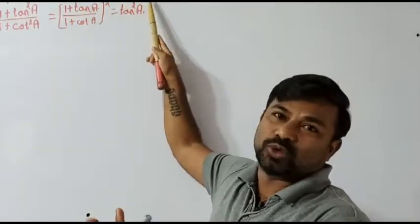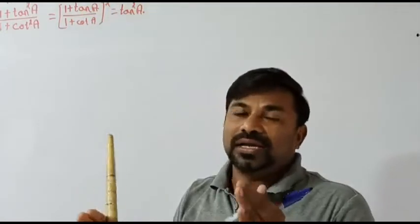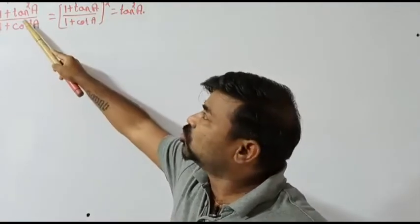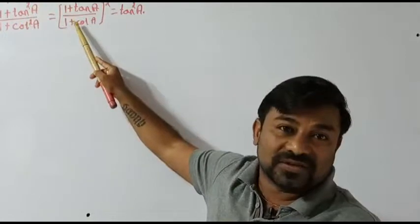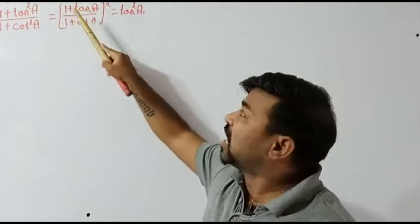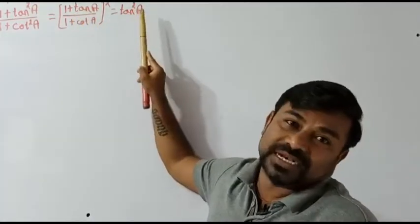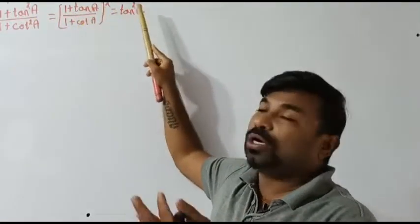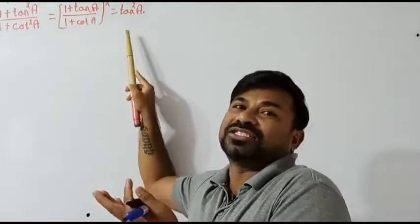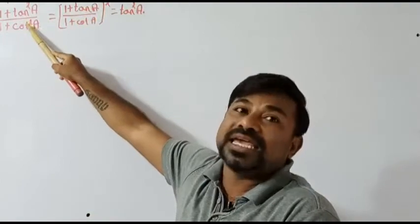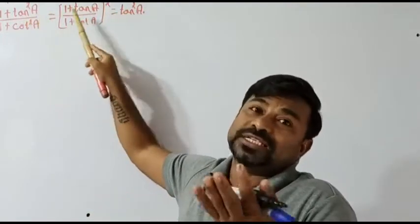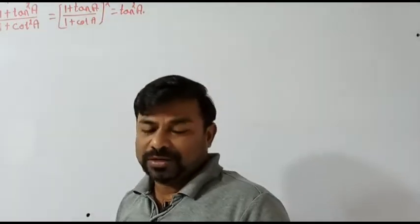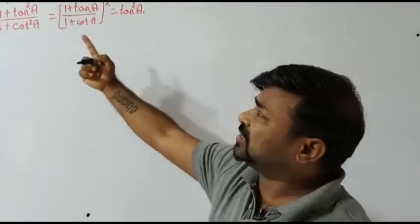We are dealing with a transitive property. We are supposed to move from the first expression to the second, and from the second to tan square a. If a equals b and b equals c, then by the transitive property a equals b equals c — that is what we are supposed to prove.